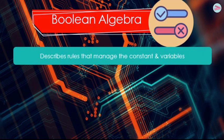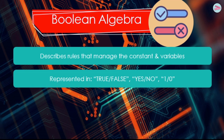The digital computer is based on Boolean algebra. Boolean algebra describes rules that govern or manage constants and variables that can take into two values that use the Boolean logic. It also can be represented in many ways, such as true or false, yes or no, or one or zero.